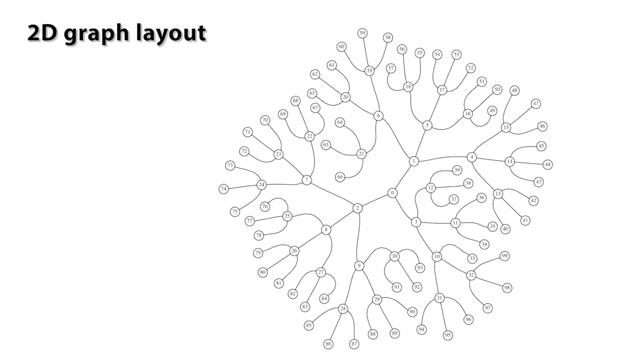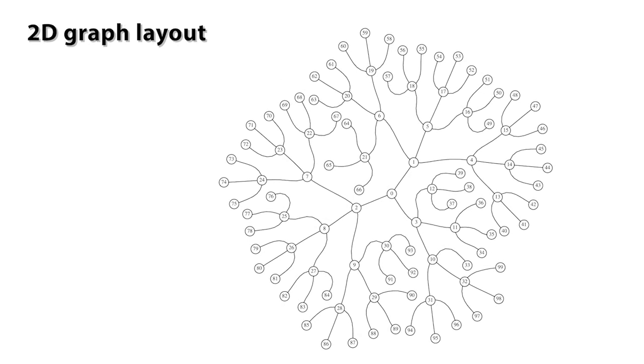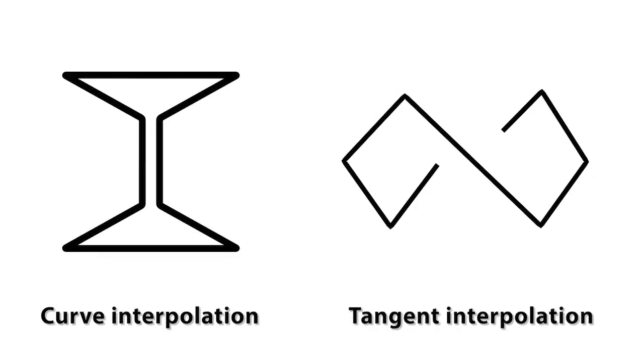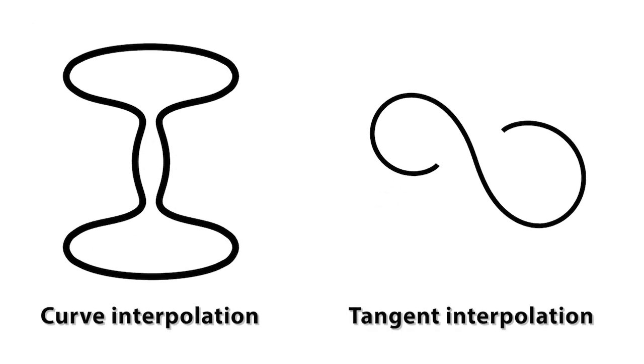By constraining our flow to the plane, we can also find self-avoiding layouts of planar graphs with uniform spacing. And by fixing specific vertex positions and tangents, we can perform self-avoiding spline interpolation.